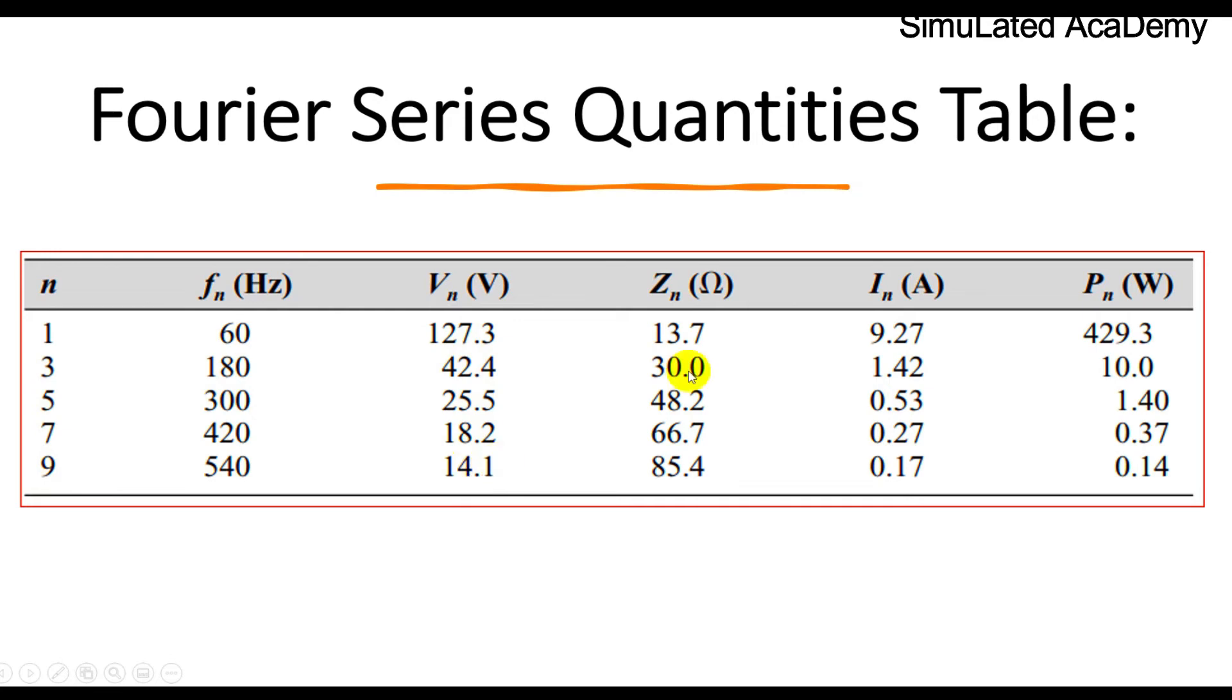Similarly, the impedance is equal to 13.7, just put n equal to 1, then 30, then 48.2 and so on. The current values is 9.27, 1.42 and so on.